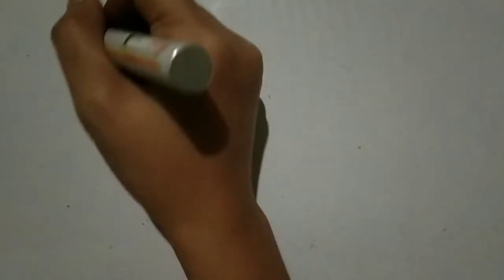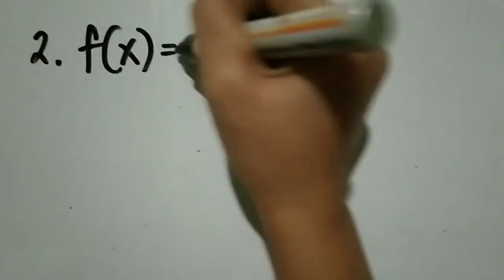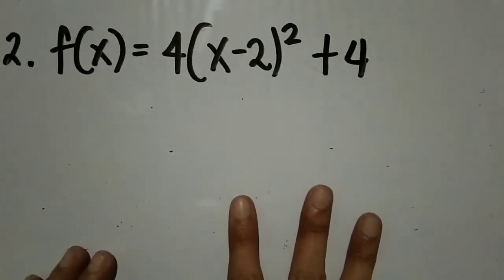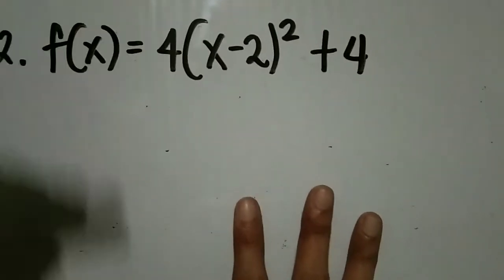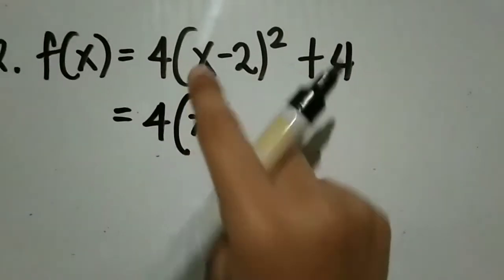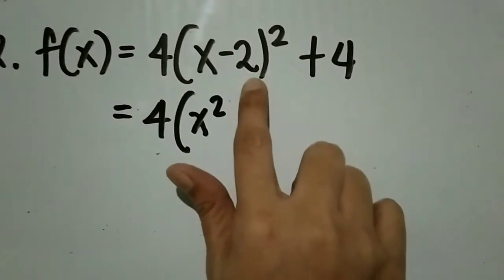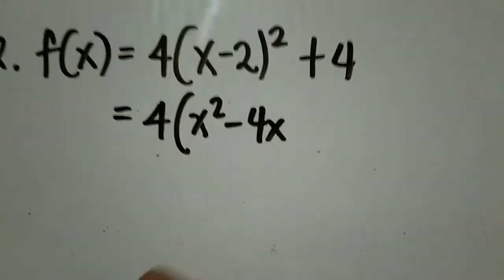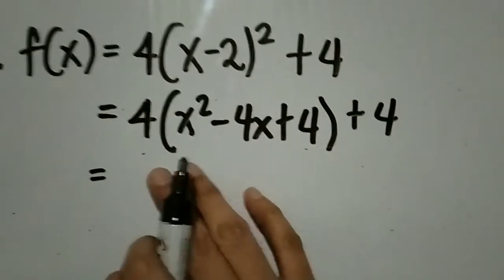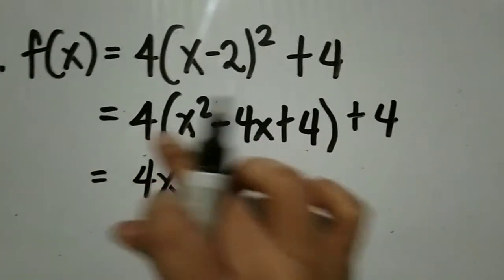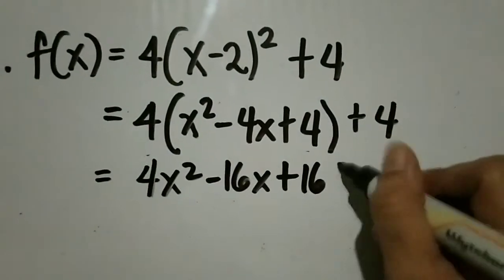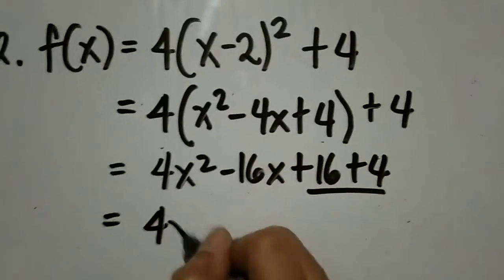Let's have number 2. Ang given natin ay f(x) = 4(x - 2)² + 4. From vertex form, i-transform natin siya into quadratic function. Unahin natin yung ating square of binomial. Square the first term: x². Then multiply the first and last term: negative 2x times 2 equals negative 4x. Then square the last term: plus 4. Then plus 4. Distributive property: 4 times x² is 4x², 4 times negative 4x is negative 16x, and 4 times 4 is 16. Plus 4.